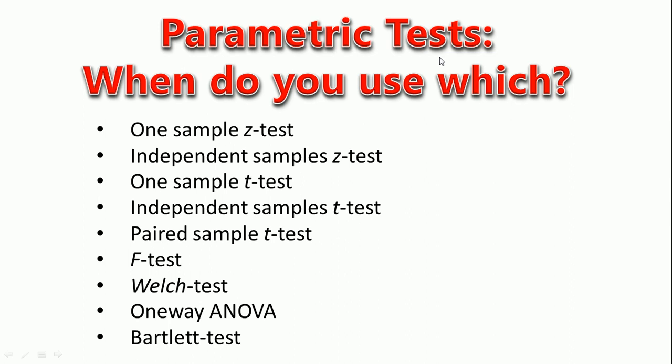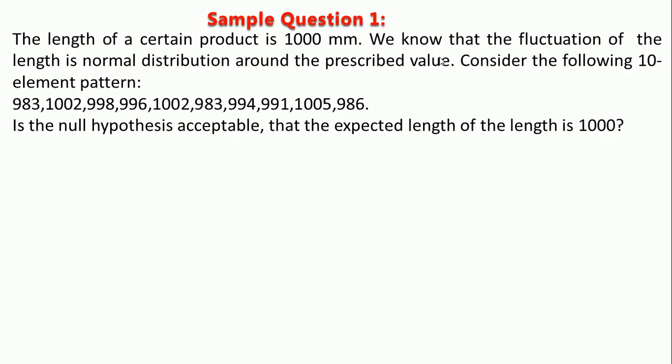These are called parametric tests. They are called parametric tests because the distribution of your data is assumed to be normal. In this case, you assume to have a normal distribution of the data. Let's now take a sample problem and choose what test to use to solve it.